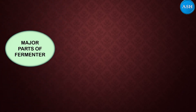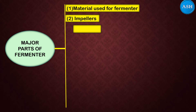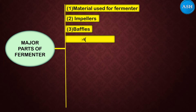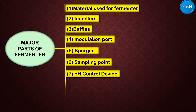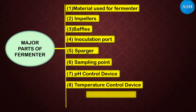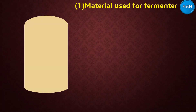We will now see the major parts of the fermenter. There are a total of 10 parts: first, material used for the fermenter; second, impellers; third, baffles; fourth, inoculation port; fifth, sparger; sixth, sampling point; seventh, pH control device; eighth, temperature control device; ninth, foam control device; and tenth, the bottom drainage system. We will study all these 10 parts in detail along with the diagram.